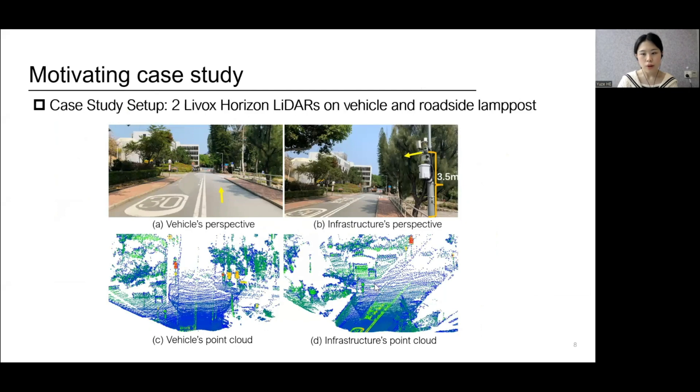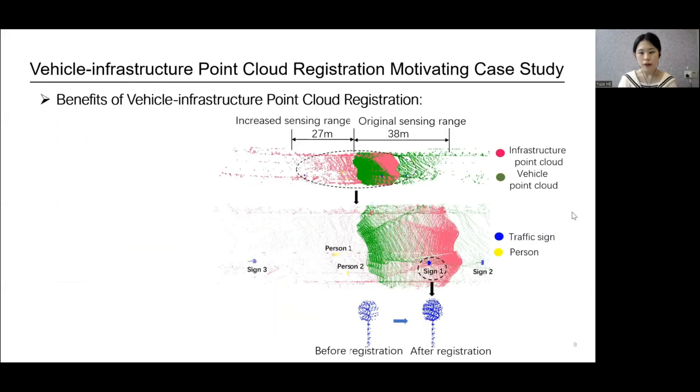We now use a real-world case study to motivate vehicle infrastructure point cloud registration. Here, two LIDARs are mounted on the vehicle and the roadside lamppost respectively. Below are the vehicle's point cloud and the infrastructure's point cloud. Here we show the point cloud registration results.